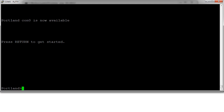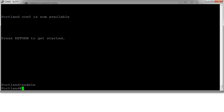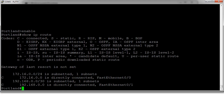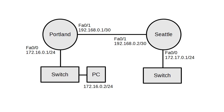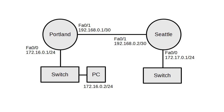Here we are in Portland. We'll go into privileged mode and look at the routing table. We can see that it knows about its direct routes, but it doesn't know about the routes on the other side of Seattle. If I want to go from Portland over to the network on the other side of Seattle, I'm going to have to send it to the Seattle router, which is 192.168.0.2. So let's configure that.